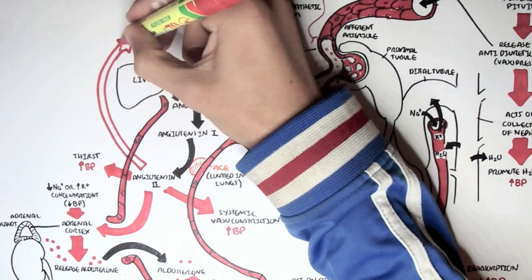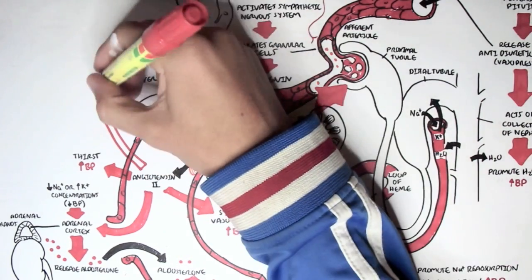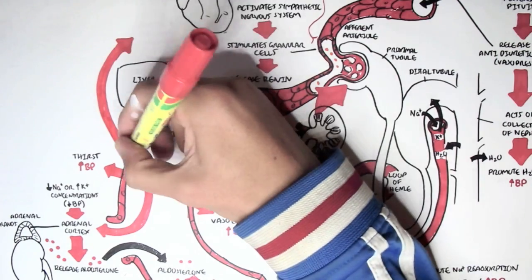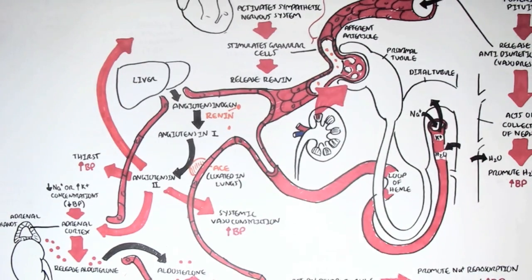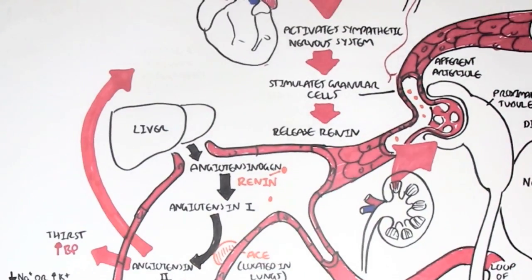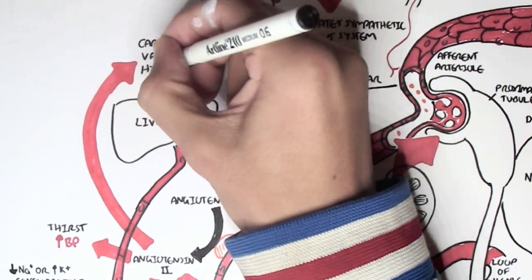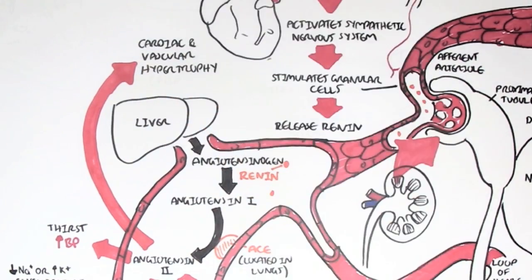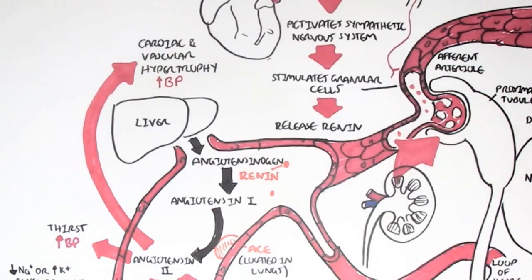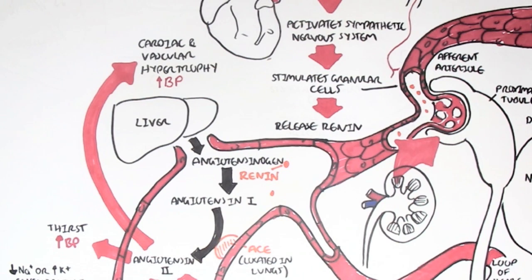Angiotensin II also causes cardiac vascular hypertrophy, meaning an increase in muscle mass and increase in contraction strength, which means an increase in blood pressure. As you can see, angiotensin II has many effects, all of which increase blood pressure.